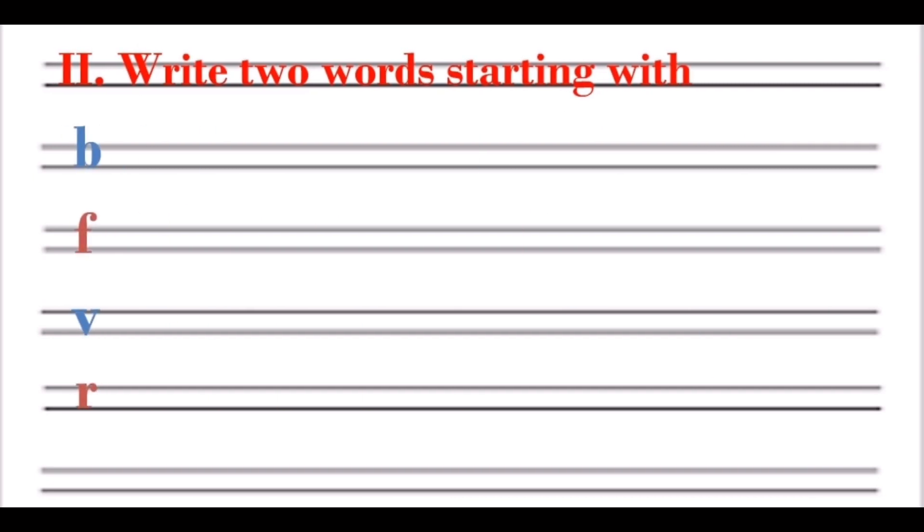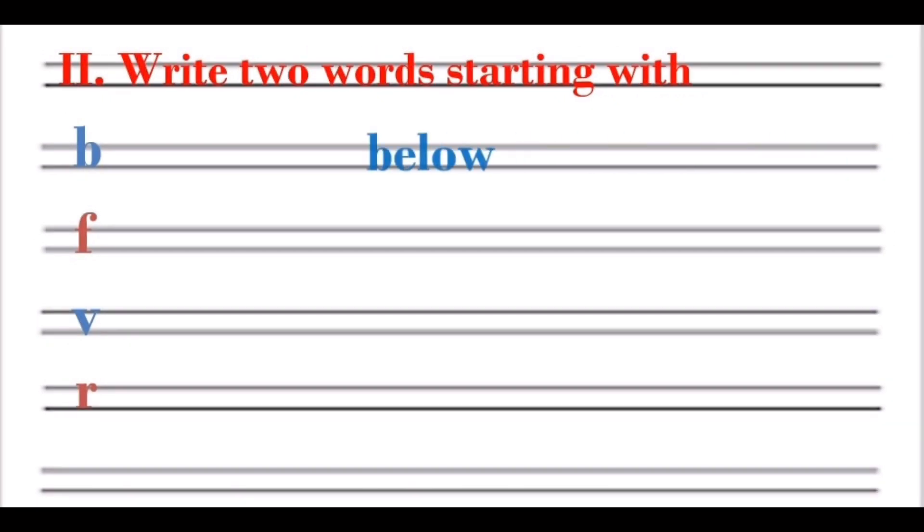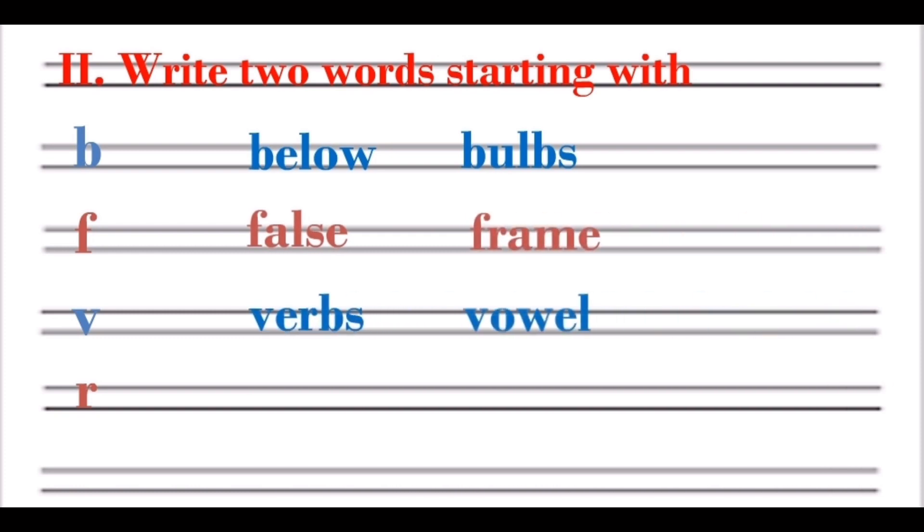Next activity: write two words starting with the letters B, F, V, R. On the letter B: Below, Belts. With F: False, Frame. With letter V: Vest, Oval. With R: Ropes, Rooms.